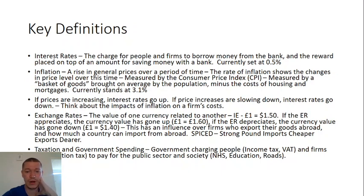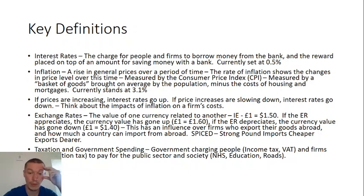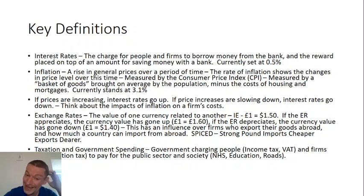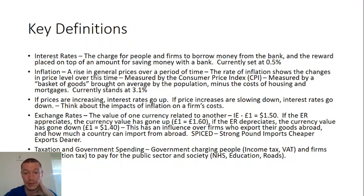With regards to exchange rates, this is the value of one currency related to another — for example, £1 equals $1.50. If the exchange rate appreciates, the currency value has gone up — for example, £1 equals $1.60. If the exchange rate depreciates, the currency value has gone down — £1 is going to be getting us $1.40. This has an influence over firms who export their goods abroad and how much a country can import. So what you want to think about is: strong pound, imports cheaper, exports dearer. When the pound is strong, it costs us as people in Britain less money relatively to bring foreign goods in. But our exports become dearer because people abroad are getting less value for their money when they exchange it.